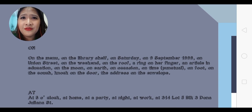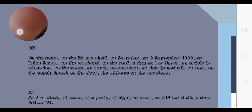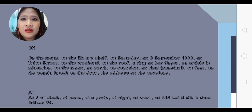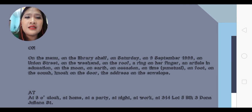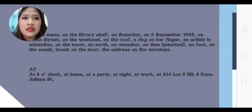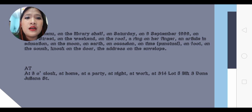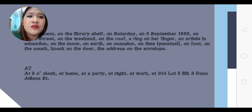More examples of 'on': on occasion, on time — meaning punctual — on foot, on the couch, knock on the door. You can't say 'knock in the door' because that would mean putting your hand inside a hole. The address on the envelope means it's written on the surface outside. When it's in the envelope, you open it and find the paper inside. 'At' is for exact time or specific location: at 8 o'clock, at home, at a party, at night, at work, at a specific address like 334 Block 3 Lot 5 Doña Juliana Street.